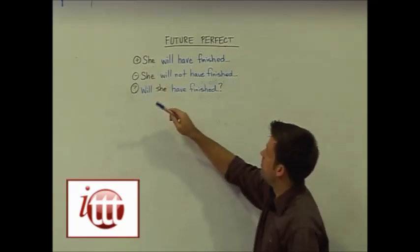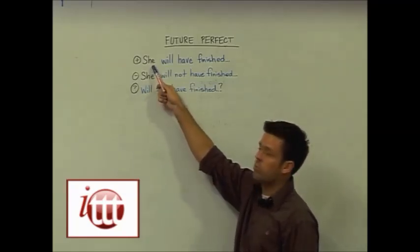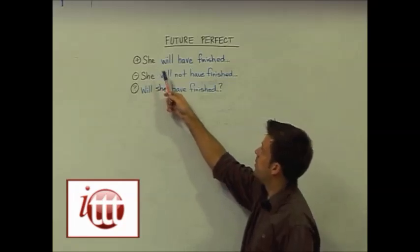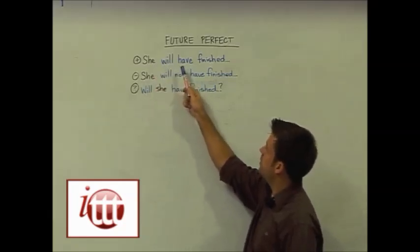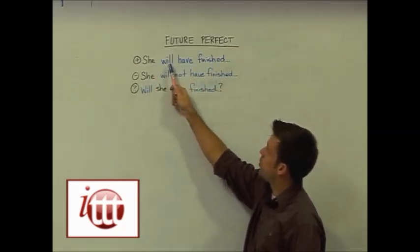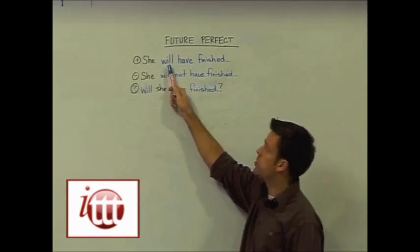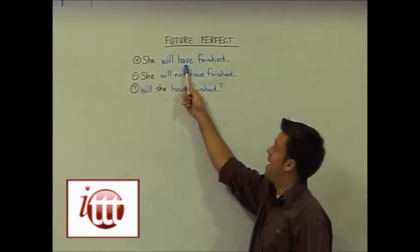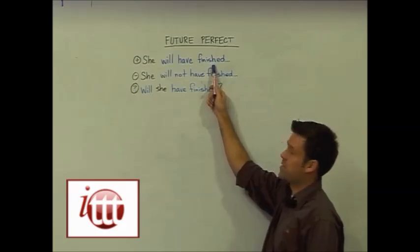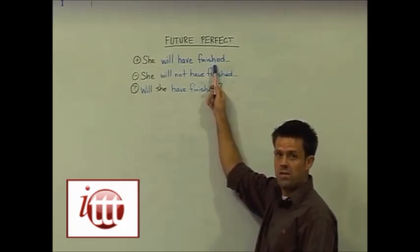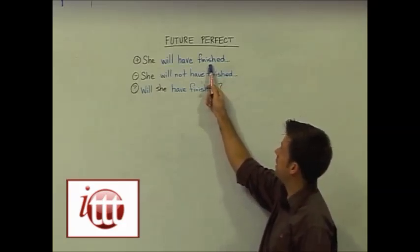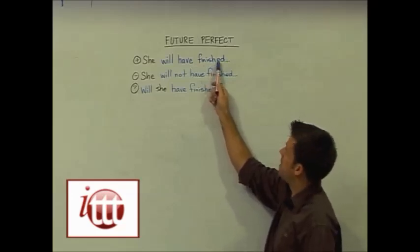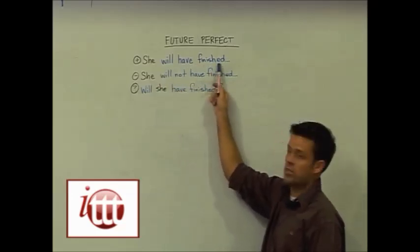Here we have for our positive form, our subject. In general, we're using the pronoun she here. So she will have finished. We're using the word will to indicate the future. We're using our helping verb or auxiliary verb have and the past participle form of the main verb. In this case here it's finish which we've conjugated as finished. She will have finished.